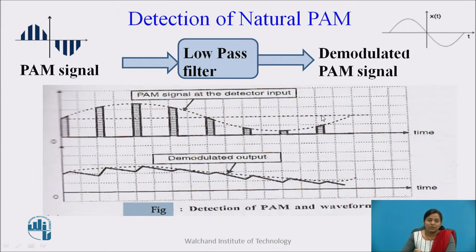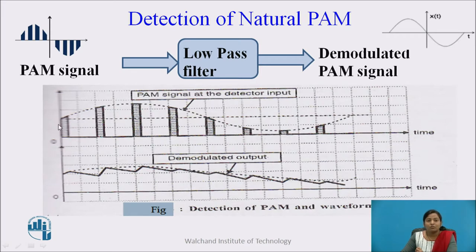For the detection of natural PAM, the natural PAM signal is passed through a low pass filter. Using this low pass filter, we can remove the high frequency ripples present in the PAM signal. The capacitor in the low pass filter circuit charges during the on pulse and discharges during the off pulse. In this way, with the help of the charging and discharging voltage of the capacitor, the continuous time signal is obtained at the output of the low pass filter. The PAM signal is demodulated using the low pass filter.